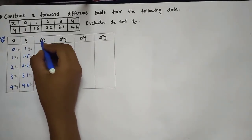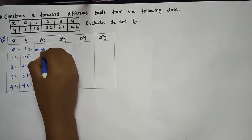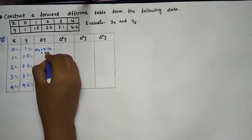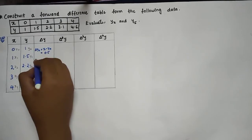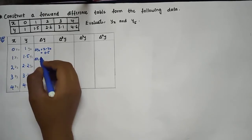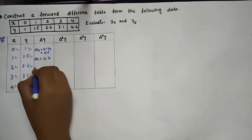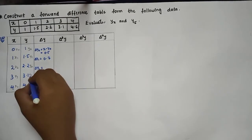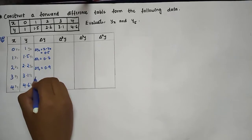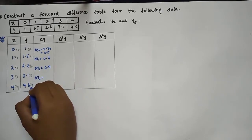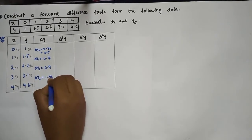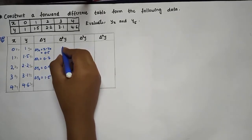Now move to the first difference, Δy. Δy₀ = y₁ − y₀ = 1.5 − 1 = 0.5. Δy₁ = y₂ − y₁ = 2.2 − 1.5 = 0.7. Δy₂ = y₃ − y₂ = 3.1 − 2.2 = 0.9. Δy₃ = y₄ − y₃ = 4.6 − 3.1 = 1.5. This completes the first difference column.